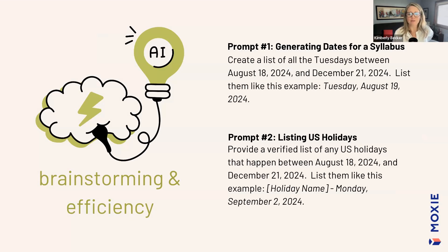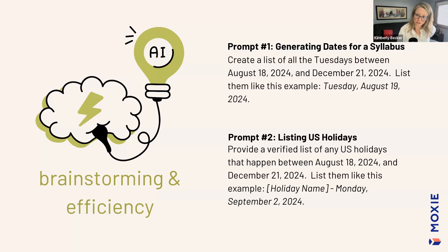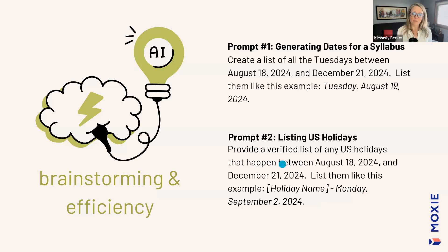The first category is efficiency and brainstorming — automating routine tasks that consume your time but add little intrinsic value, like scheduling or initial idea generation. One thing that was annoying every semester when I was teaching was changing all those dates in my syllabus — shifting from Tuesday-Thursday to Monday-Wednesday-Friday, getting dates and times correct. That's something I can automate, along with the list of holidays. The prompts end with an example of what you want out — this is called a one-shot prompt, where 'shot' just means example. The tool I recommend for this is Perplexity, because it's connected to important data sources and is less likely to hallucinate.